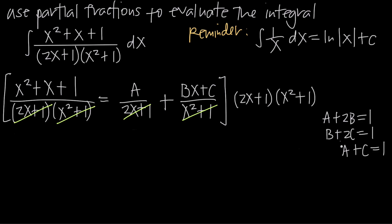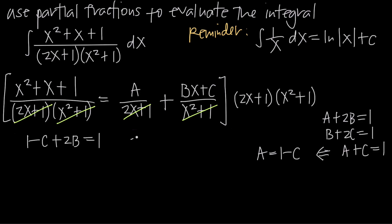Now let's eliminate one of the variables — we'll eliminate A. From the last equation A plus C equals 1, we subtract C from both sides and get A equals 1 minus C. Since A equals 1 minus C, we plug it into the first equation: 1 minus C plus 2B equals 1. Rewriting, we keep the 2B and minus C, then subtract 1 from both sides to get 2B minus C equals 0.